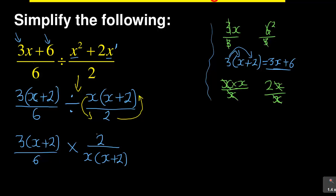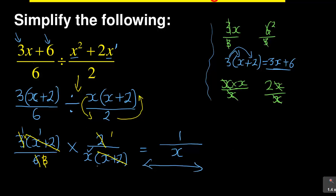Now with multiplication it becomes easier to cancel. The 2 divides into 6 to give 3, and that 3 cancels with the other 3. Then the bracket (x + 2) cancels with the other bracket (x + 2). Everything on top becomes 1, and everything on the bottom cancels except x. So the final answer is 1 over x. Students sometimes write just x — don't forget, after all the canceling you still have 1 on top, so it's 1/x.